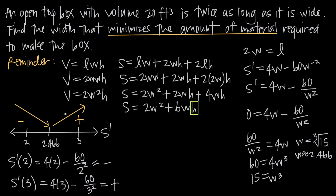With the first derivative test, we've proved that w = 2.466 minimizes S — the surface area, or amount of material required. Going back to the question, we're asked to find the width, so our final answer is w = ∛15 ≈ 2.466 feet. This is the width that minimizes the amount of material required to make the box.